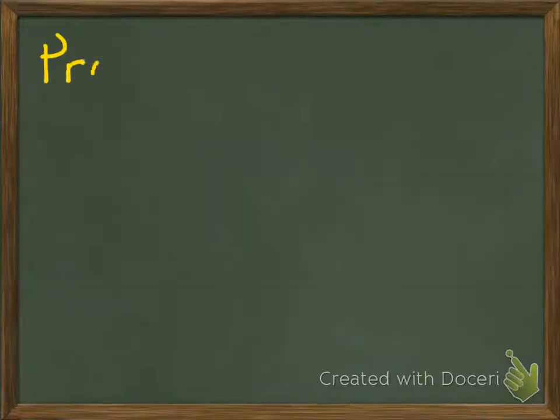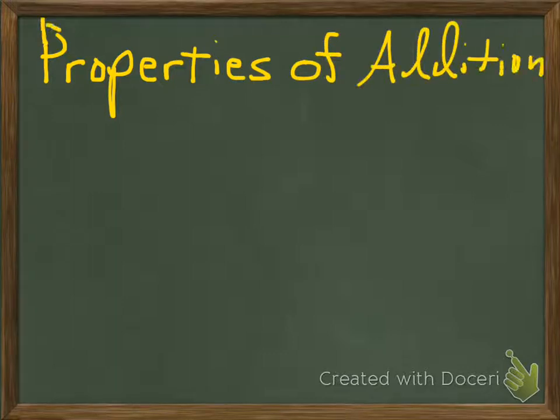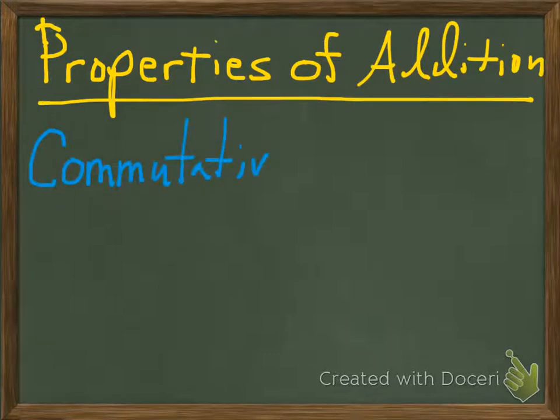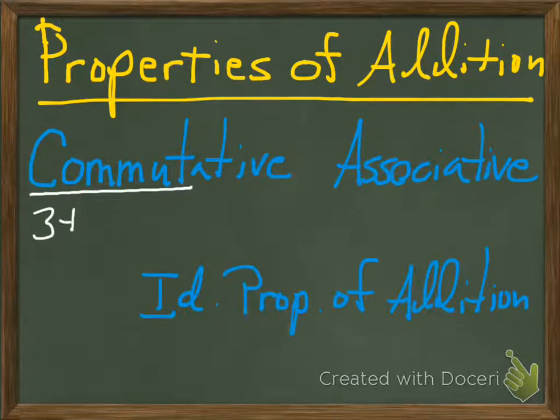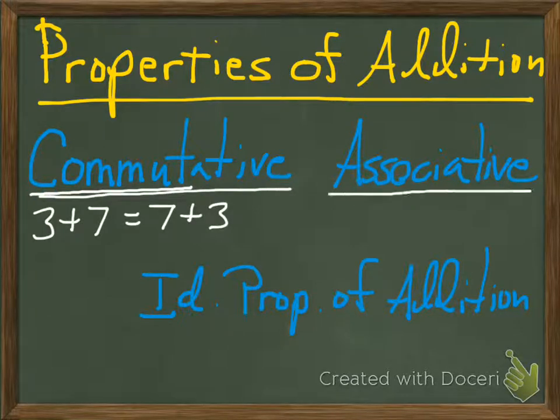Let's move on and talk about the properties of addition. There are three properties we're going to talk about. The first is commutative, the second is associative, and the third is the identity property of addition. Let's go through each of these and talk a little bit about what they mean.